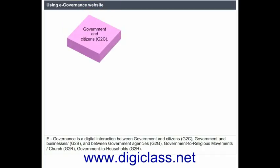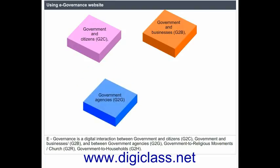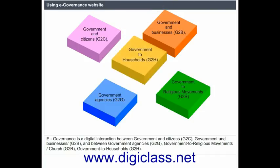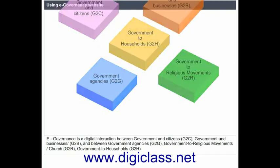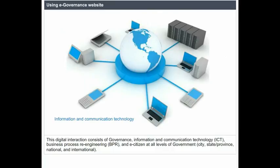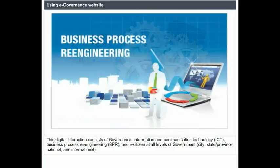E-Governance is a digital interaction between government and citizens, government to businesses, between government agencies, government to religious movements, and government to households. This digital interaction consists of governance, information and communication technology, business process re-engineering, and e-citizen at all levels of government — city, state or province, national and international.